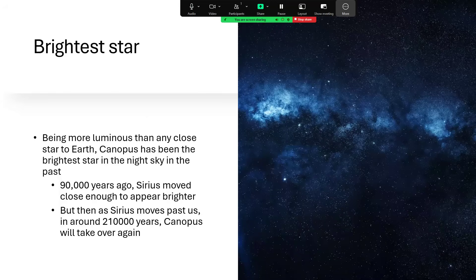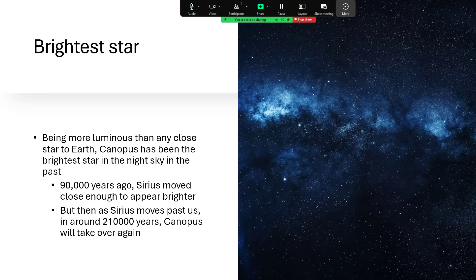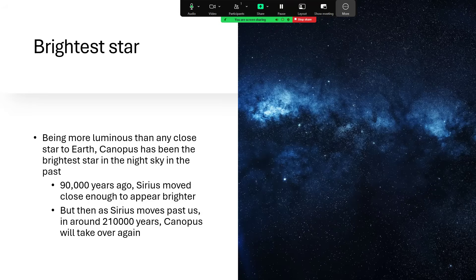But in the past, it has also been the brightest star in the night sky. It's such a powerhouse of a star, and one of the most powerful stars in the nearby parts of the galaxy, that about 90,000 years ago, it lost its first place to Sirius, as Sirius came closer.